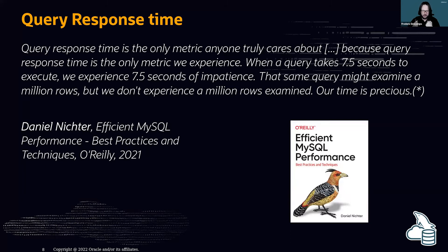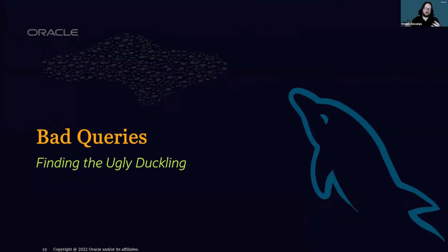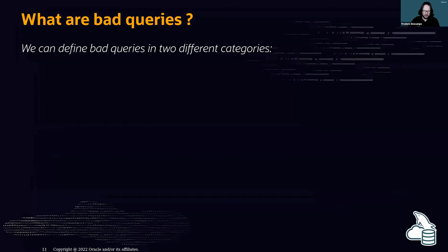The goal of this session is to reduce query response time. When people blame the database and are sure the database is the problem, we need to find the ugly duckling — the bad queries. We can define bad queries in two categories.